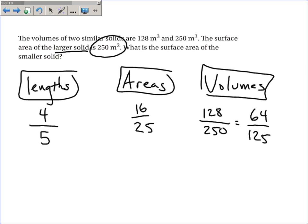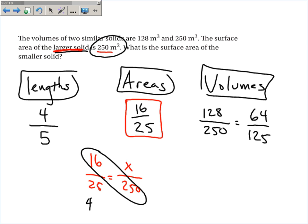This ratio is exactly what I need to answer this question. They give me the larger solid has a surface area of 250. So, 16 over 25 is equal to, let's see, the larger one goes with the bigger number, 250x. And I cross multiply. 16 times 250 is 4,000, is equal to 25x. Divide both sides by 25. And I get x to be equal to 160 meters squared.